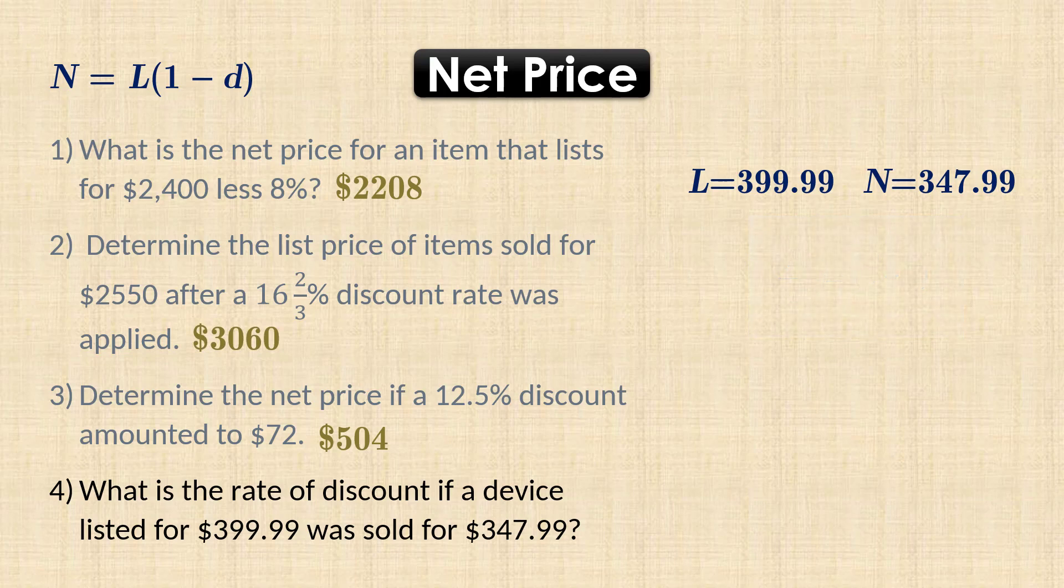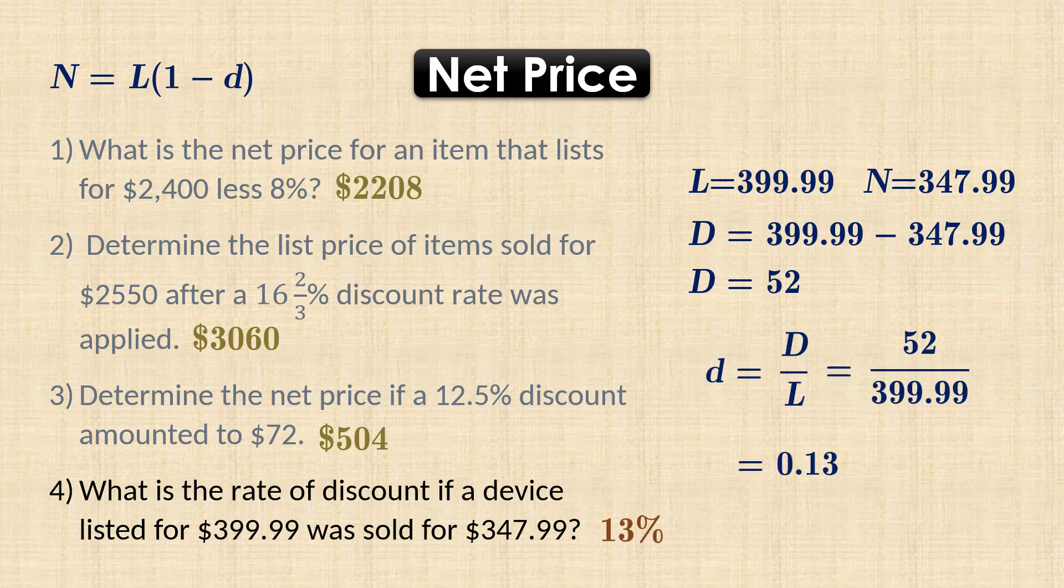We can also easily find the amount of discount by subtracting the net price from the list price, and that gives $52. And then find the rate of discount by dividing the amount of discount by the list price, and that gives 13%.